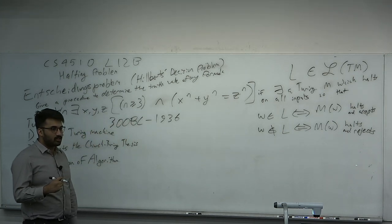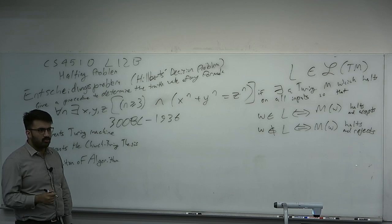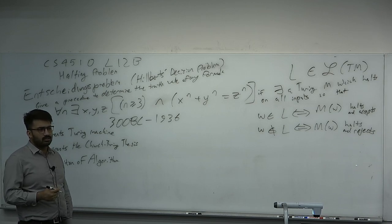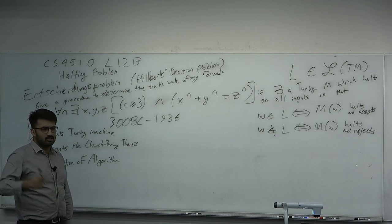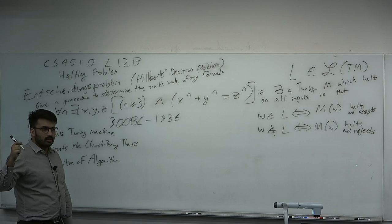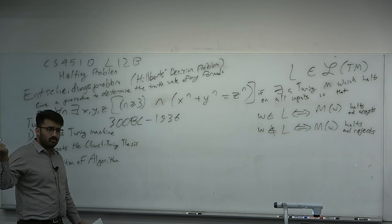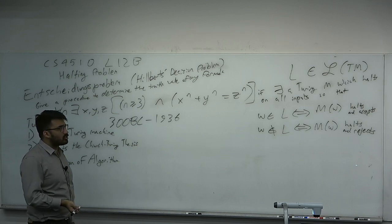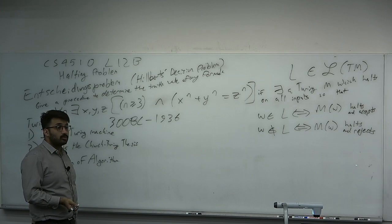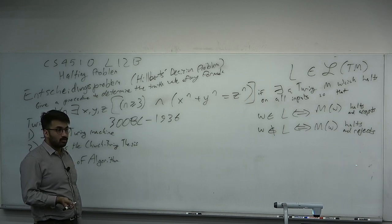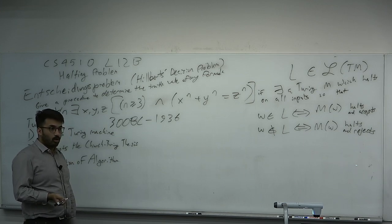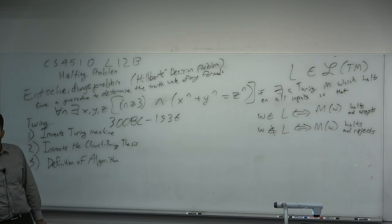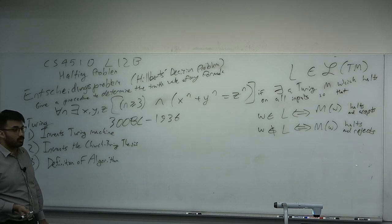Think about it — if you have a piece of code that on a certain input diverges, it just loops forever. Is that an algorithm to solve the problem? Let's consider our definition of algorithm to be one which halts on all inputs. This is again just the definition of what it means for a language to be decidable.